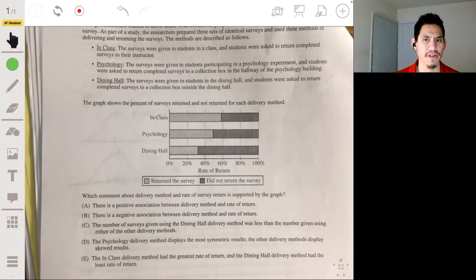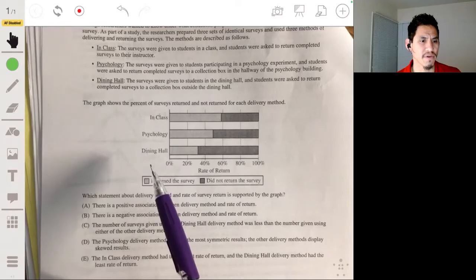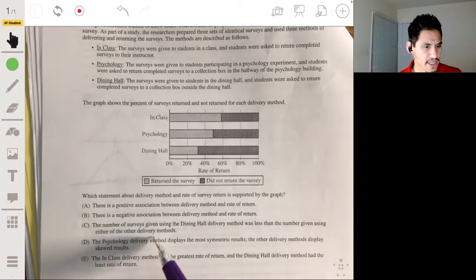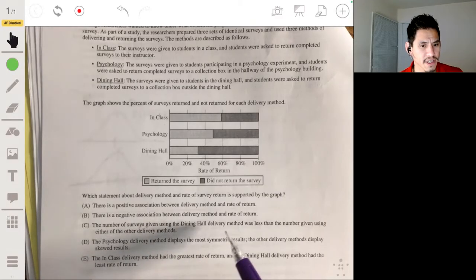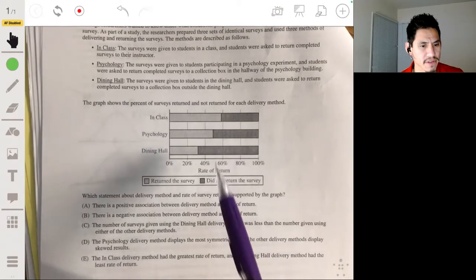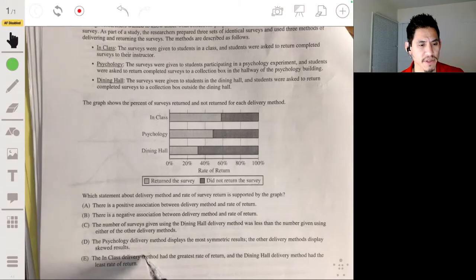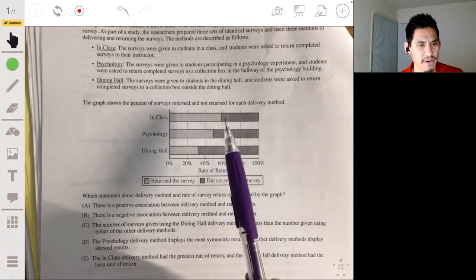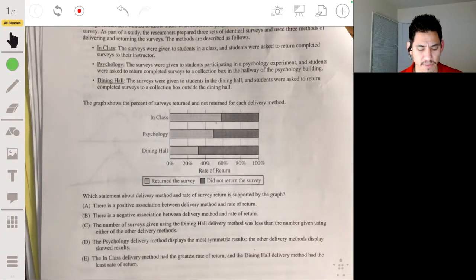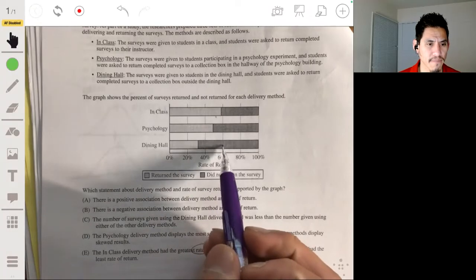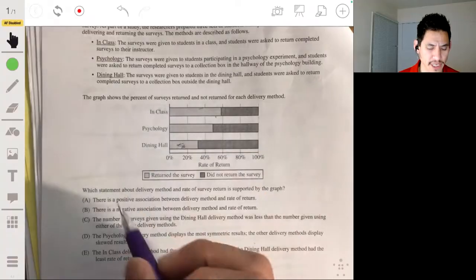So you can measure this. You can't determine association because you need to have this measured on like a continuum of numbers. So all we can really say is, we can't say nothing about symmetry or the shape. We can't say nothing about the strict raw count, because all we can say is the proportion of percent. So we can say that E would be the answer, because this is the in-class delivery method has the greatest rate of return, which is the percent. And a dining hall delivery method had the least rate of return, which it did. So the answer would be E.